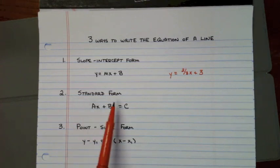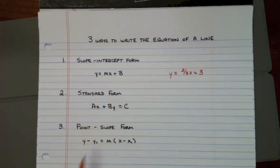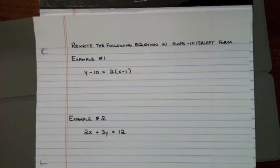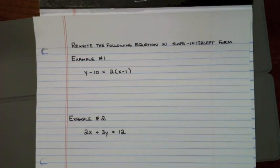These are the other two ways you can write the equation of a line: standard form and point-slope form — we'll go over those in the next video. For example number one, they're giving you an equation and you have to change it into slope-intercept form.